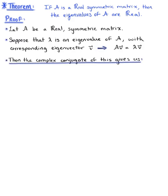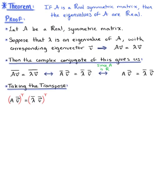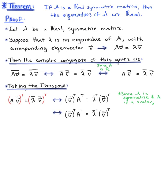Taking the complex conjugate of this eigenvalue equation and simplifying, and noting that since matrix A is real, we're left with A times v-bar equal to lambda-bar times v-bar. Now taking the transpose of this equation and simplifying by the properties of the transpose, and since A is symmetric and lambda is a scalar, we're left with v-bar-transpose times A equal to lambda-bar times v-bar-transpose.